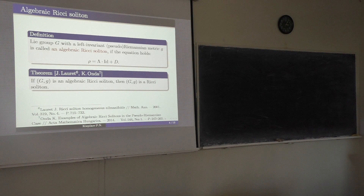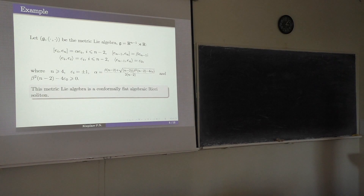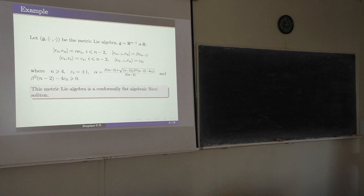Before formulating the main result, we must be sure that such solitons exist. For example, we may consider this Lie algebra. The non-trivial Lie brackets and scalar products are shown on the slide. This metric Lie algebra is the same as a direct product, where epsilon_i is plus or minus one, representing the signature of the scalar product.